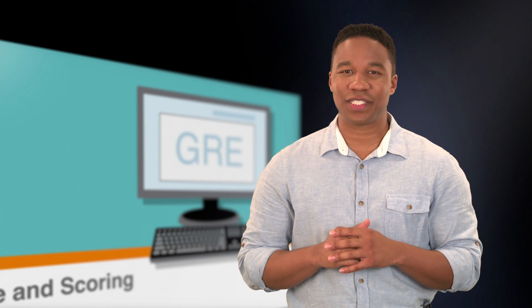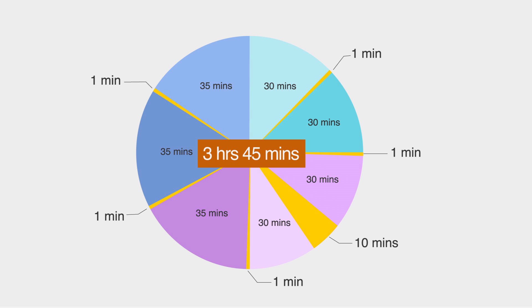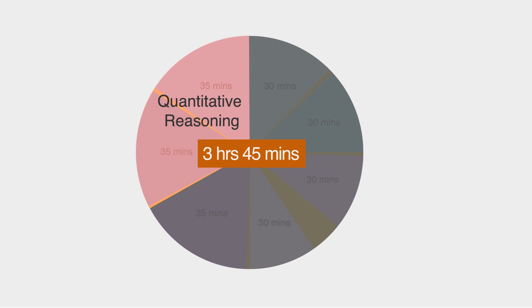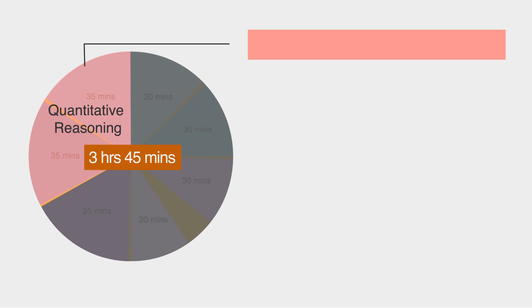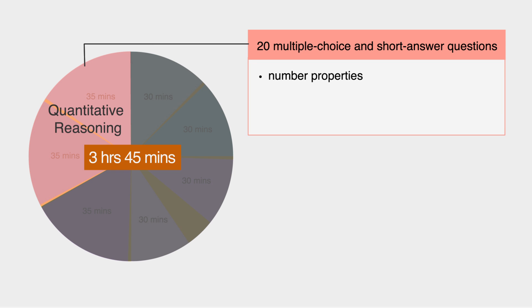The Quantitative Reasoning section is broken up into two parts with 35 minutes for each part. It has a mix of multiple choice and short answer questions for a total of 40 questions. This section tests your knowledge of number properties, arithmetic, basic algebra, and geometry.